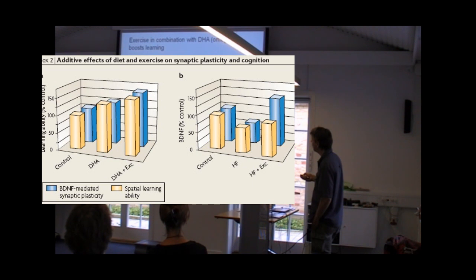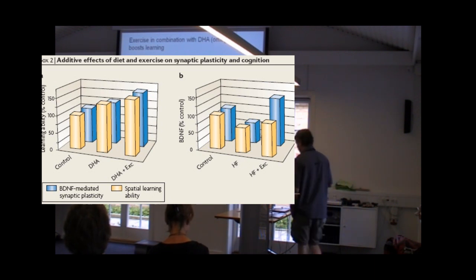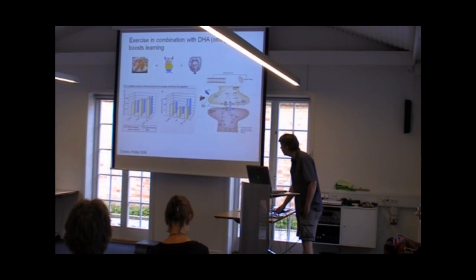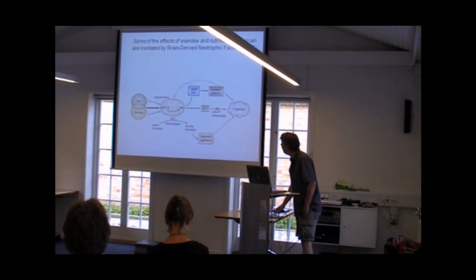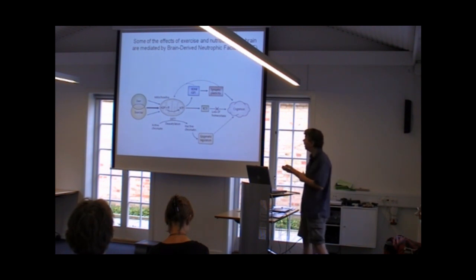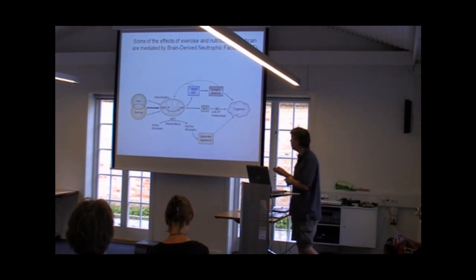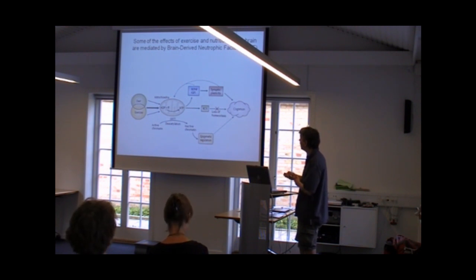So in this case, if you look at spatial learning ability, for instance, you see that the combination of the two is much, much bigger than just giving DHA alone. And if you look at BDNF production, it's also mainly if you combine the two that you see the main effect. So there are some effects which seem to be stronger when you combine diet and exercise.